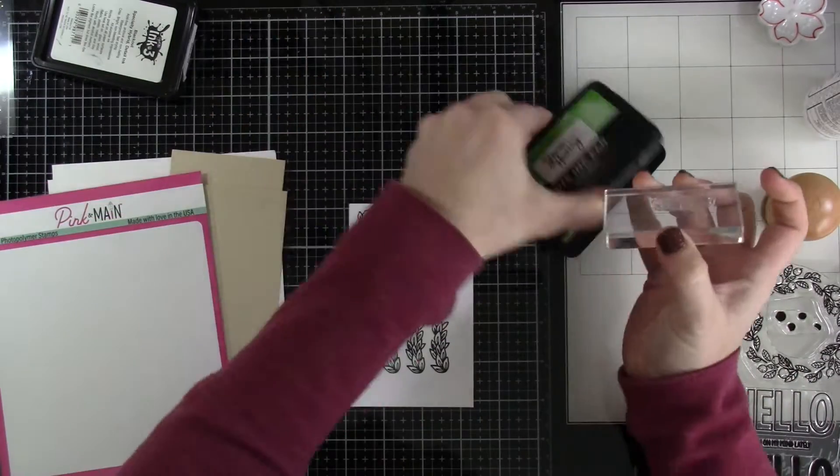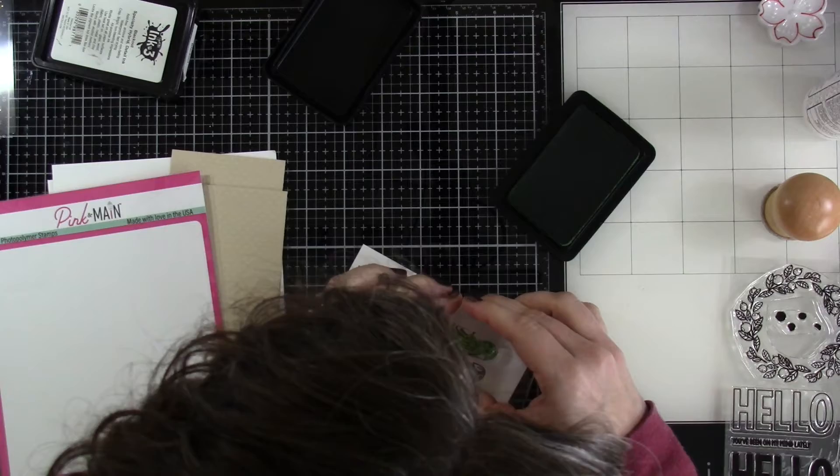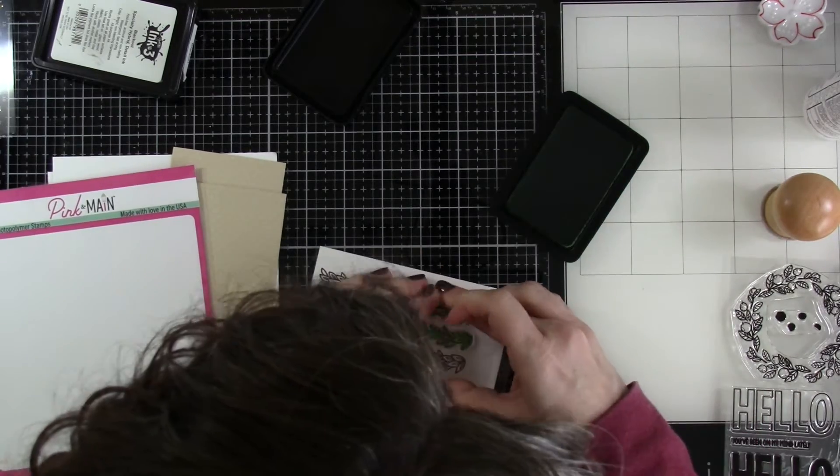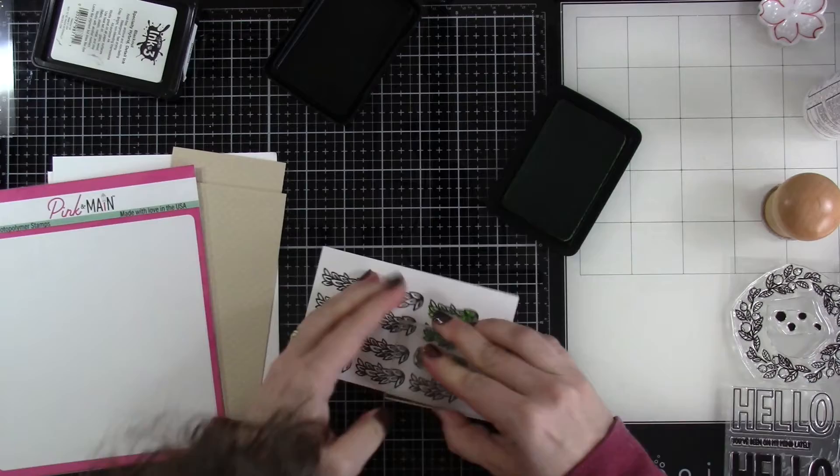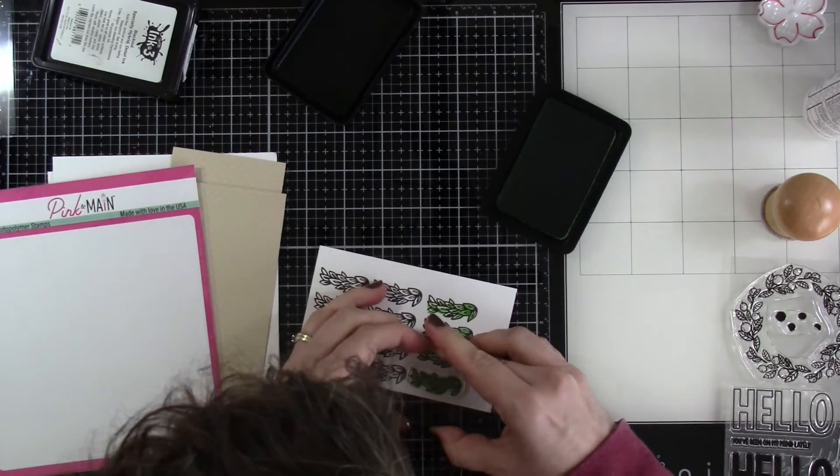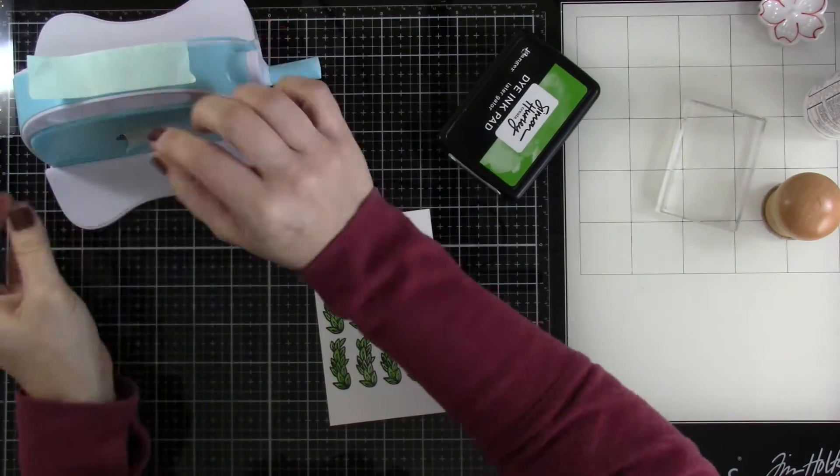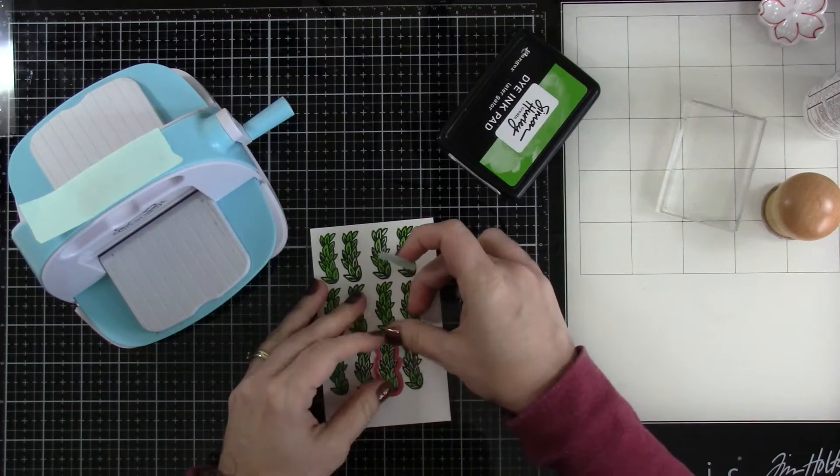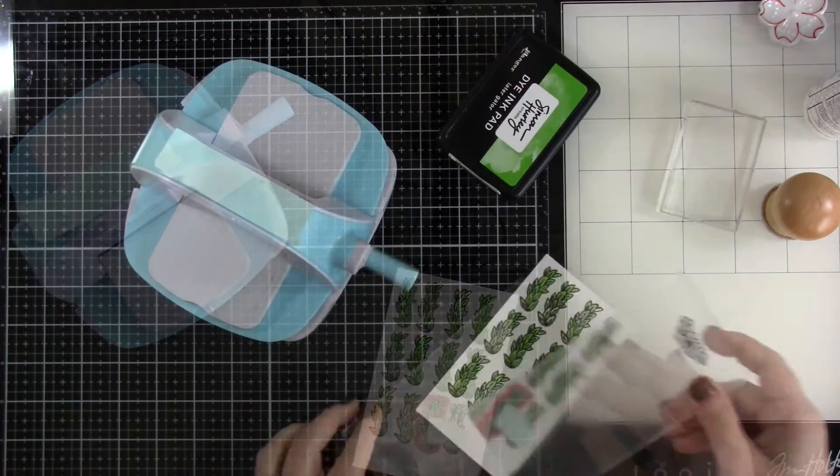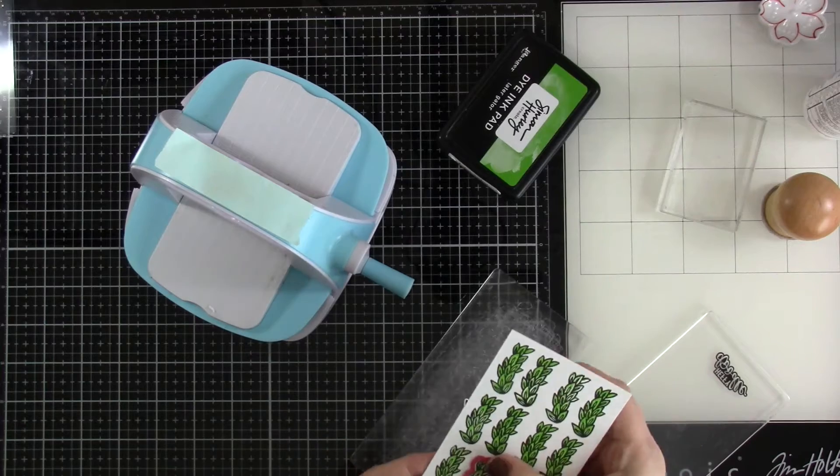And then when I'm happy with how many I have, we're going to grab the solid bit and stamp right over the top. We're going to do that for all of them, and I get better as I go along, but it's pretty easy to line up. Then we'll bring in our matching die and run that through our die cutting machine a bunch of times until we have all of those die cut out.